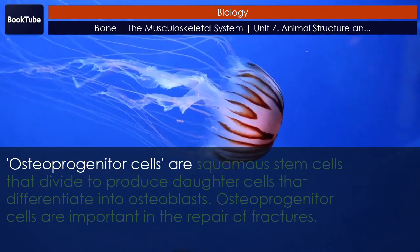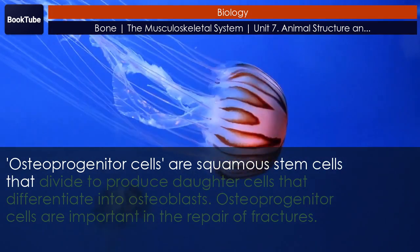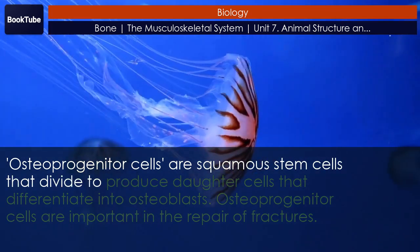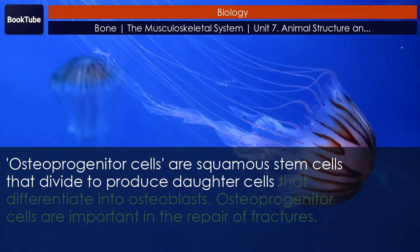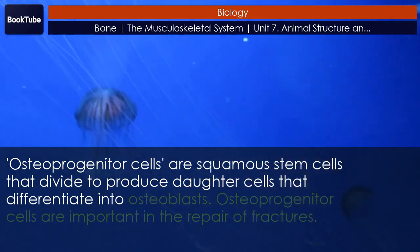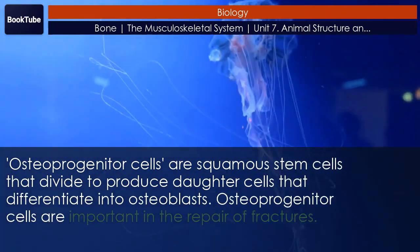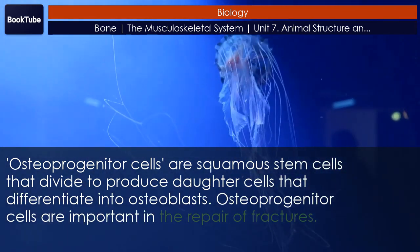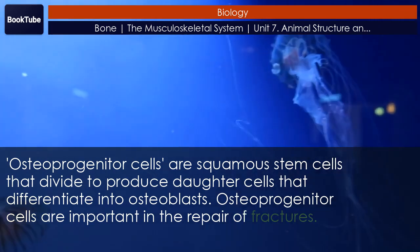Osteocytes cannot divide. They maintain normal bone structure by recycling the mineral salts in the bony matrix. Osteoprogenitor cells are squamous stem cells that divide to produce daughter cells that differentiate into osteoblasts. Osteoprogenitor cells are important in the repair of fractures.